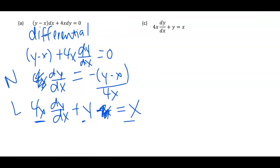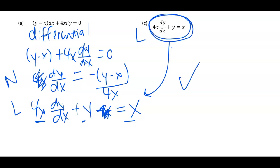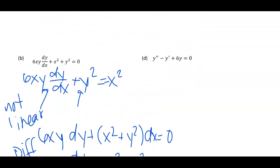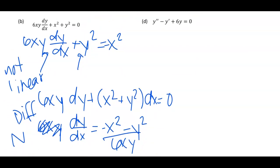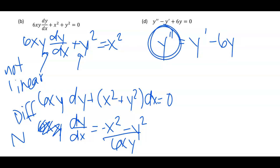The last example is already in linear form — it's the same one we worked with earlier, so try writing it in the other forms yourself as a check. Since the final example is second order, I can't write it in differential form, but I can write it in normal form: y-double-prime equals y-prime minus 6y. Now I have the leading derivative isolated, and the right-hand side is a function of x, y, and y-prime.